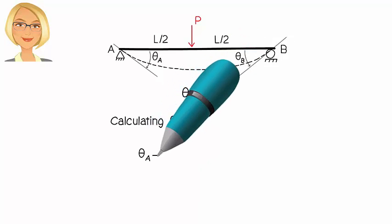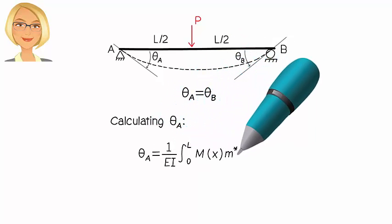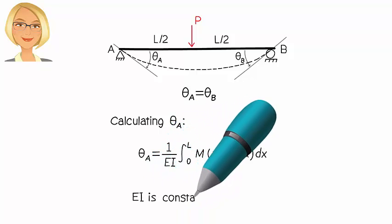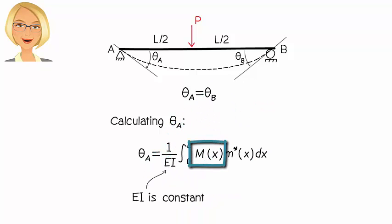So we can write the equation where Mx is the beam's bending moment equation due to the applied load, and M*x is the bending moment equation due to a virtual unit moment placed at A in the assumed direction of joint rotation. Mx can be easily determined as shown here.